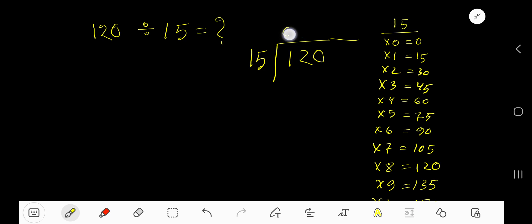15 goes into 1 how many times? 15 goes into 1 0 times because 1 is less than 15. 0 times 15 gives you 0. You need to multiply these 2. So subtract 1. Bring down these 2.